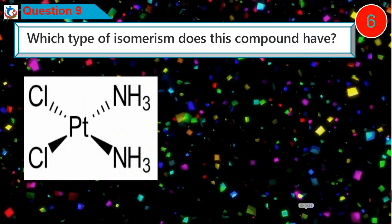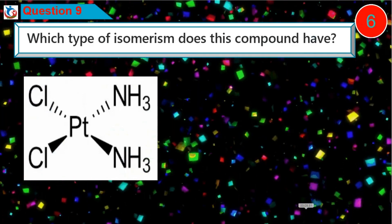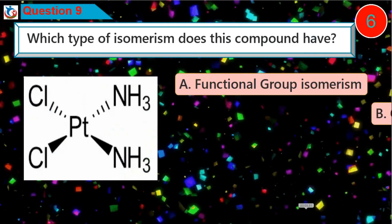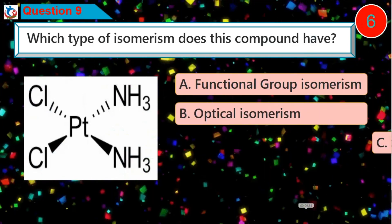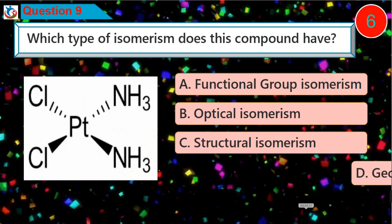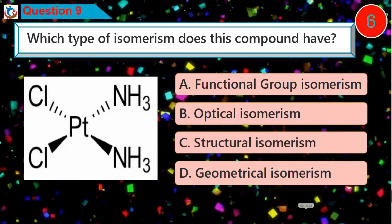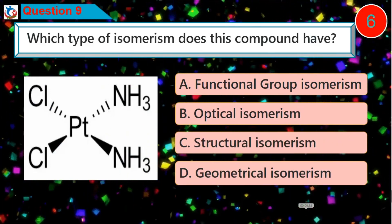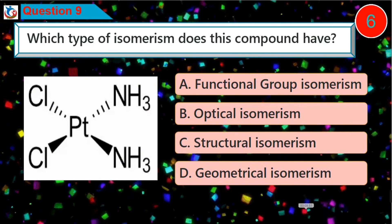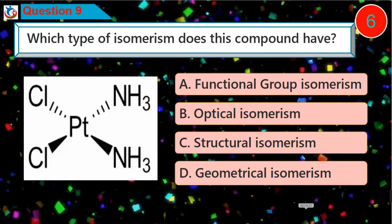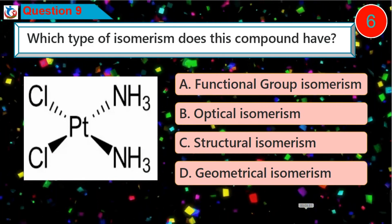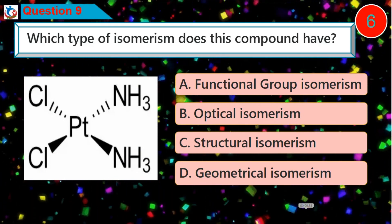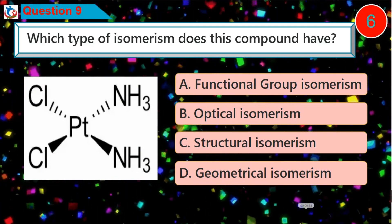Question 9: Which type of isomerism does this compound have? A. Functional group isomerism, B. Optical isomerism, C. Structural isomerism, D. Geometrical isomerism.